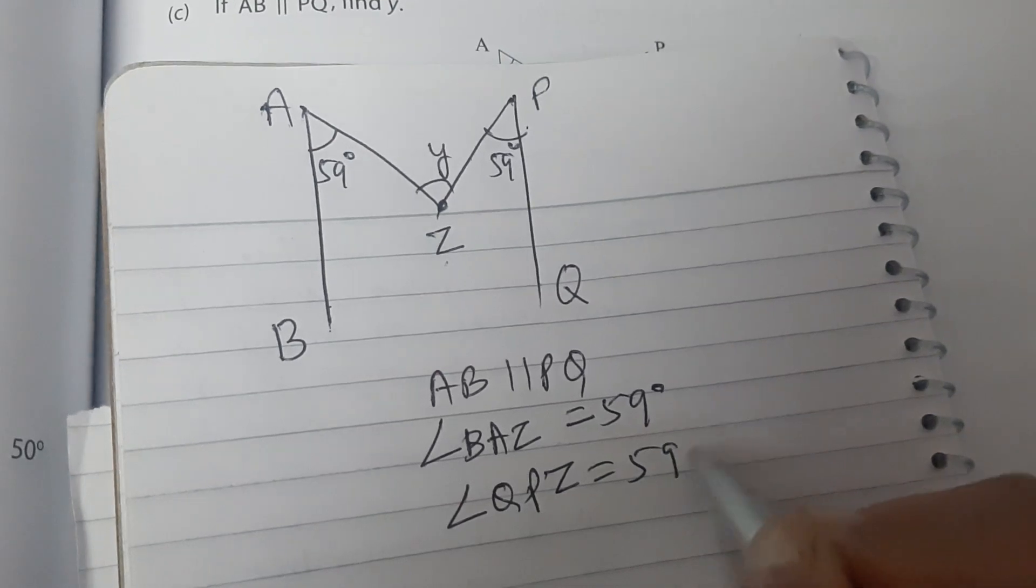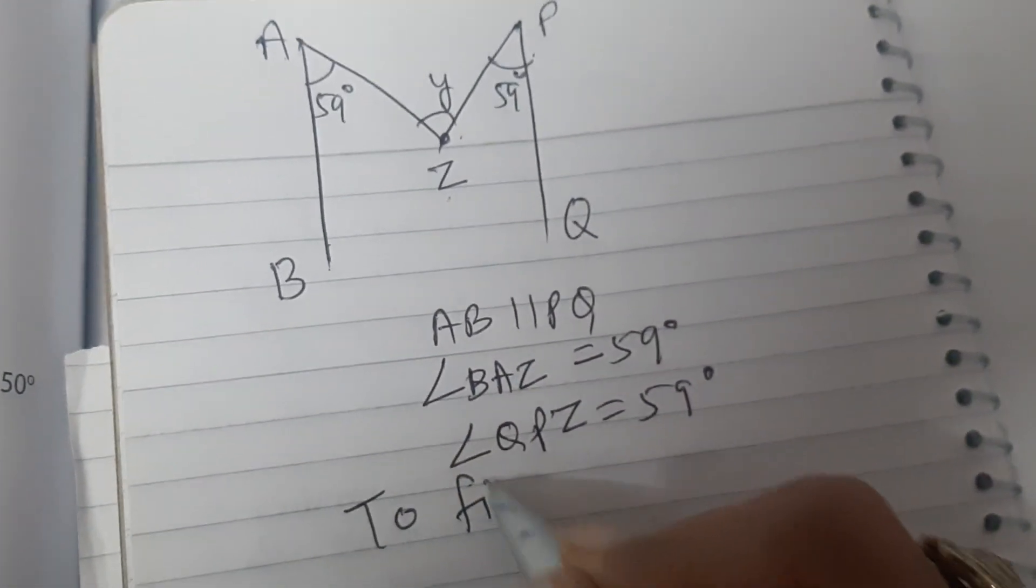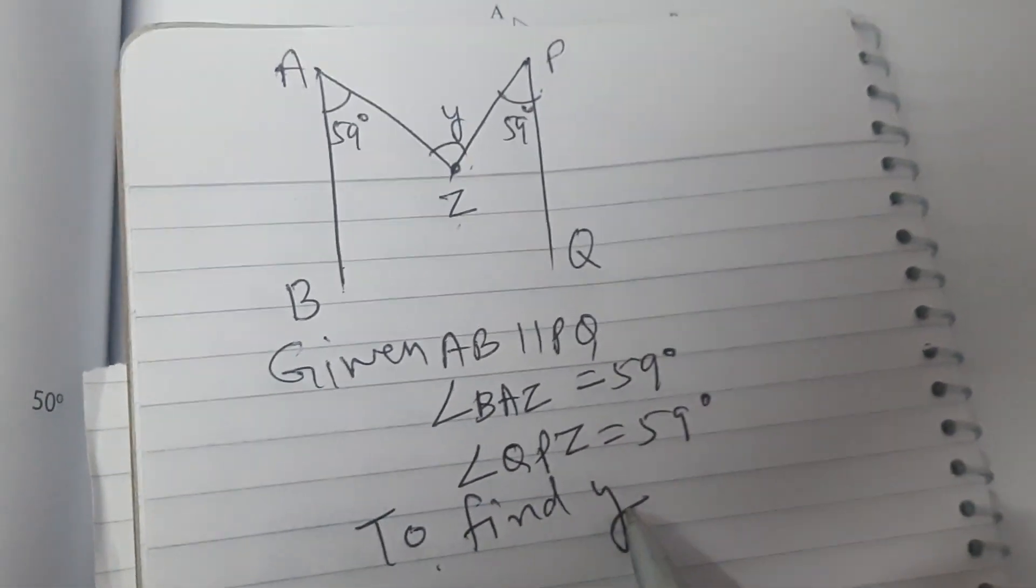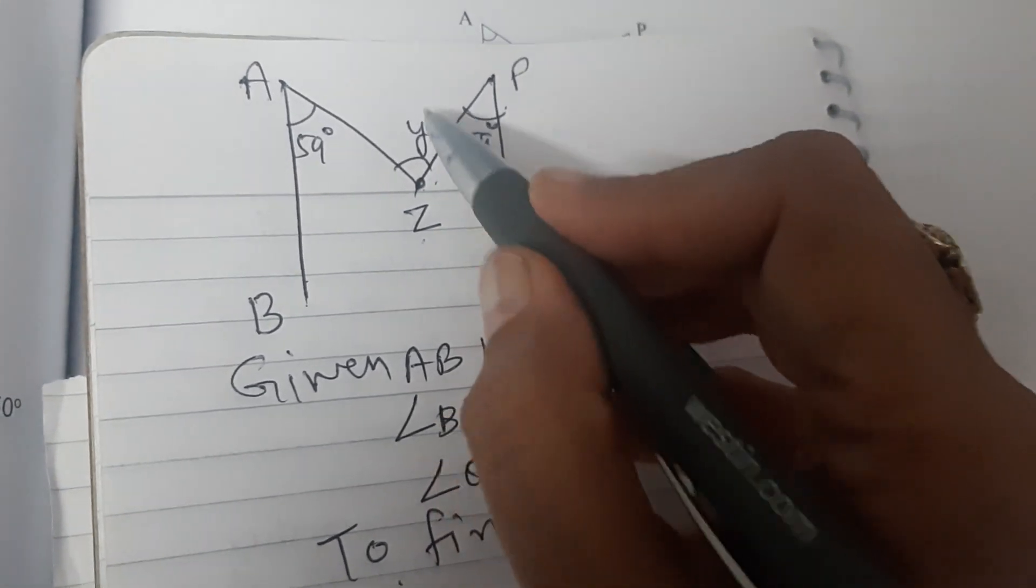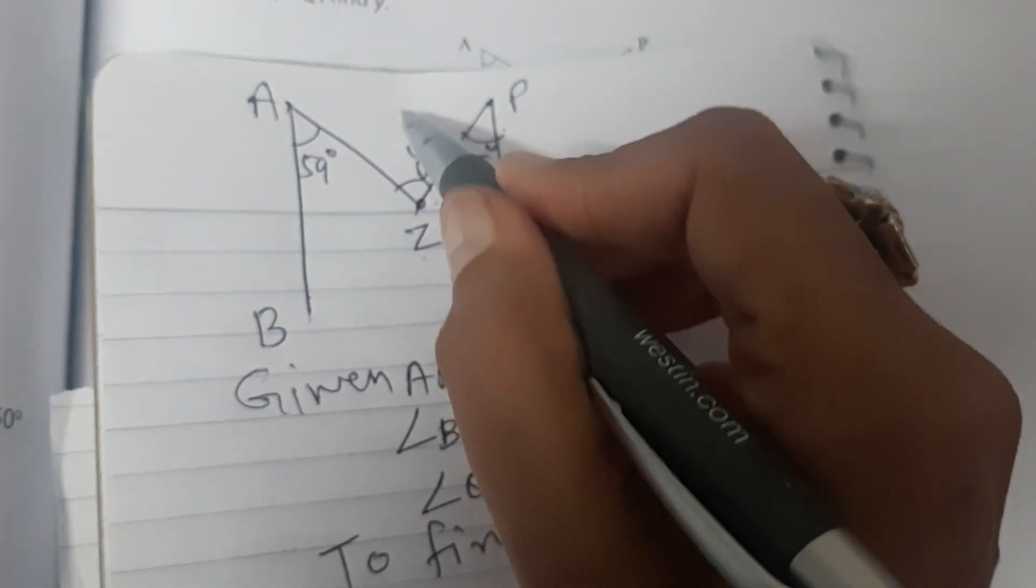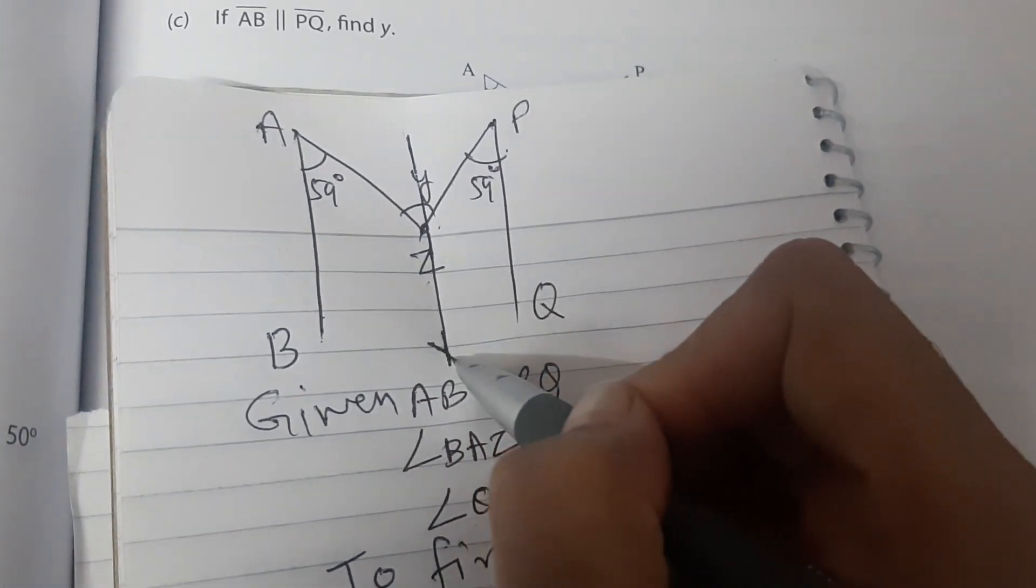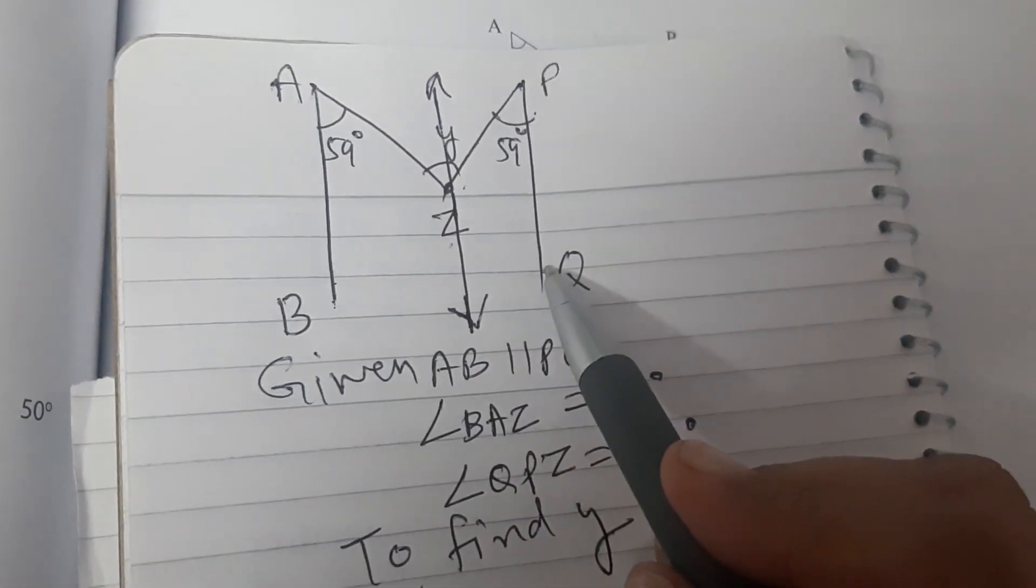This is what is given and we have to find Y. Now what we will do is we will construct a line passing through Z which is parallel to AB as well as PQ.